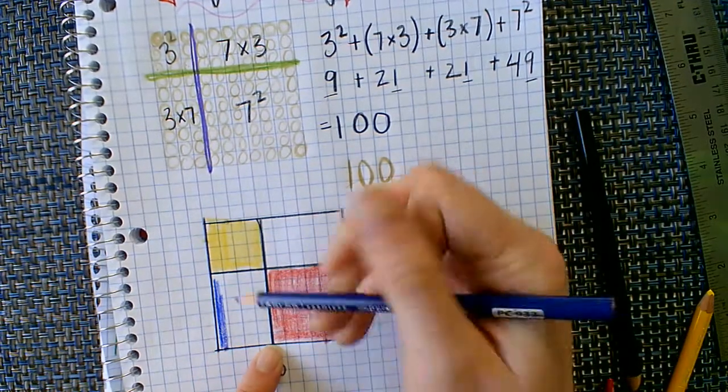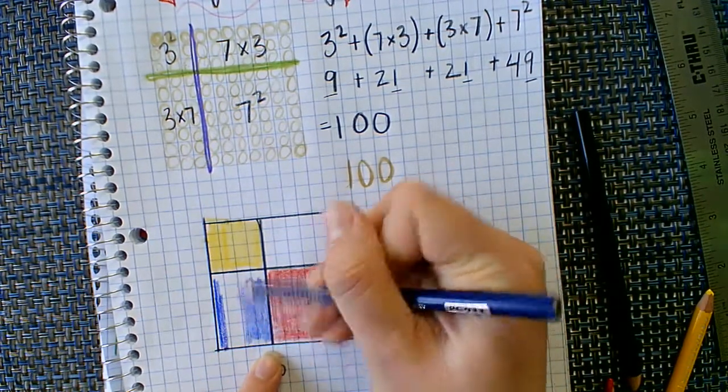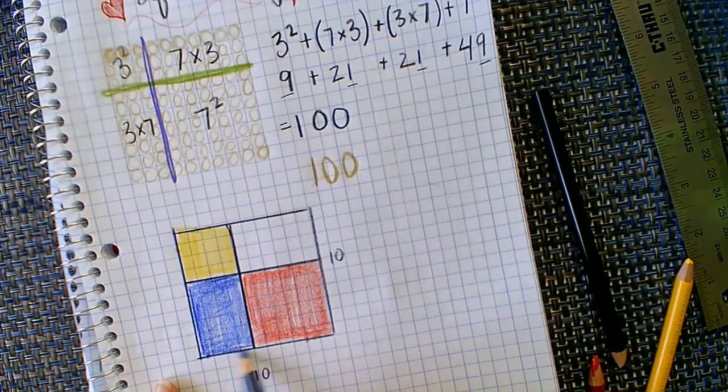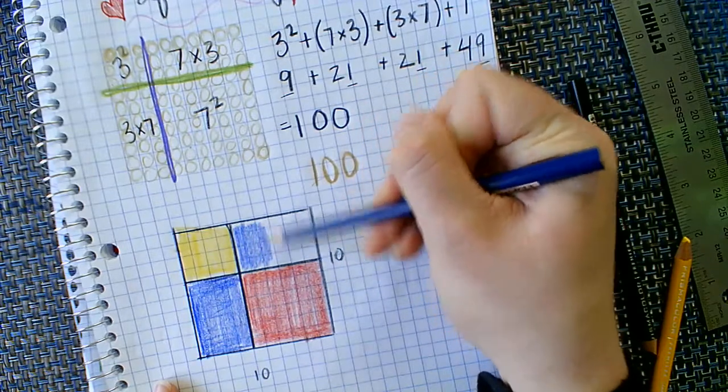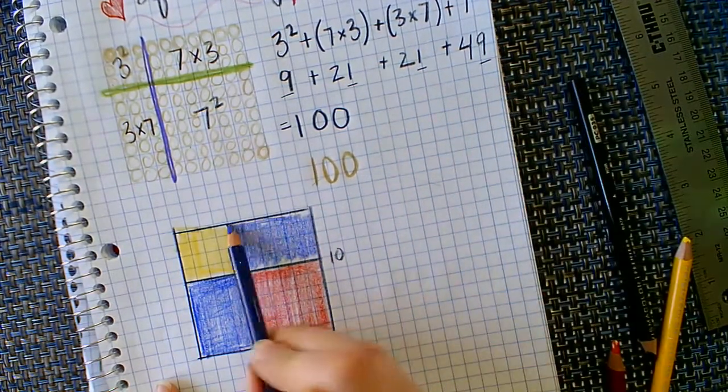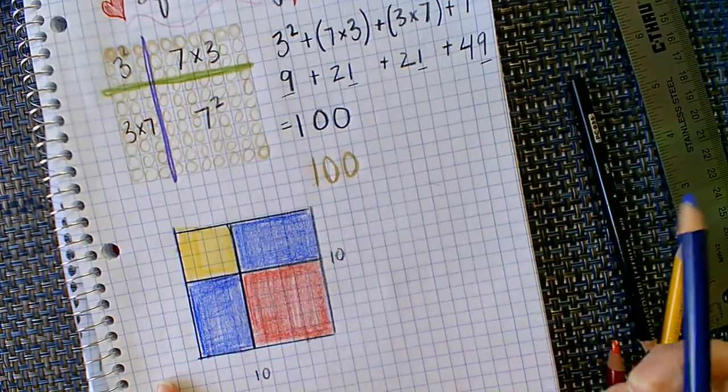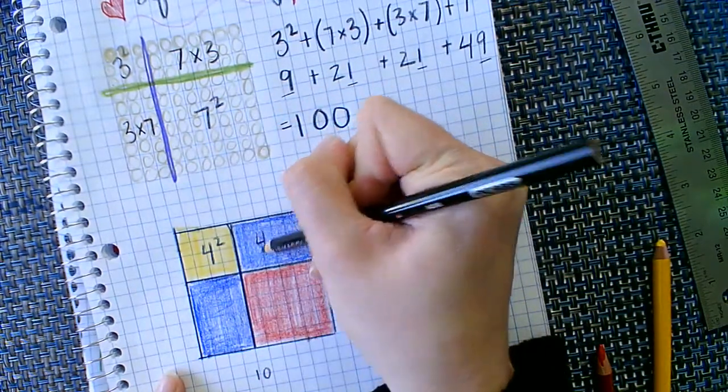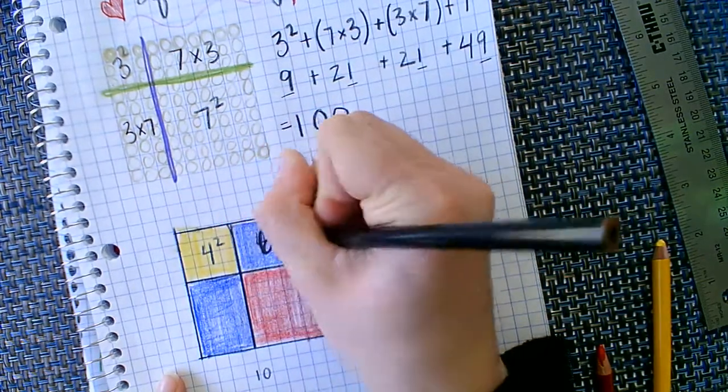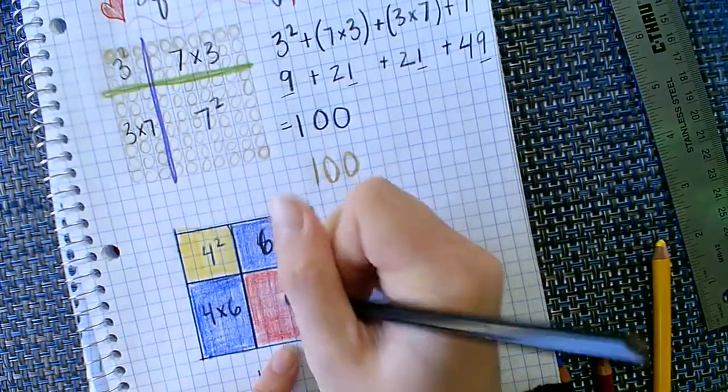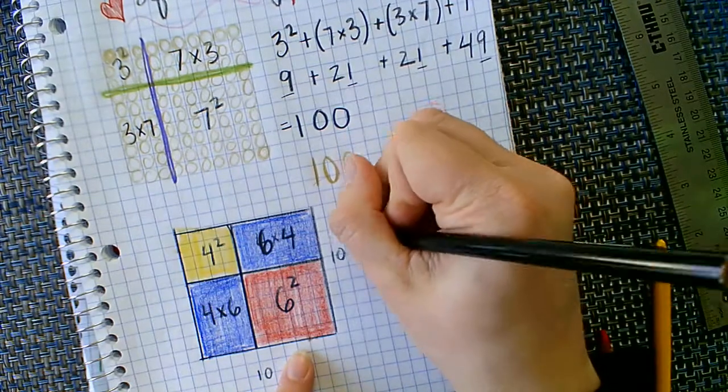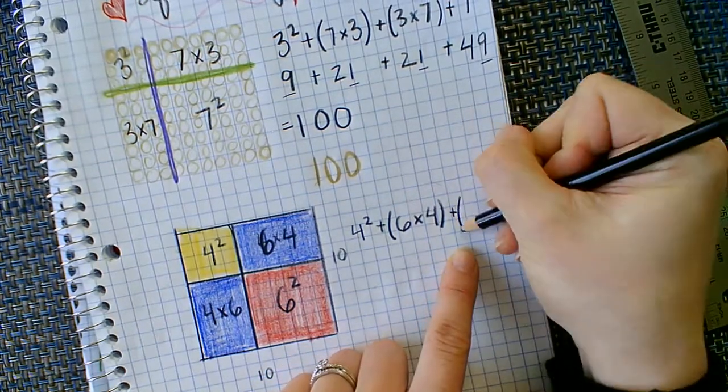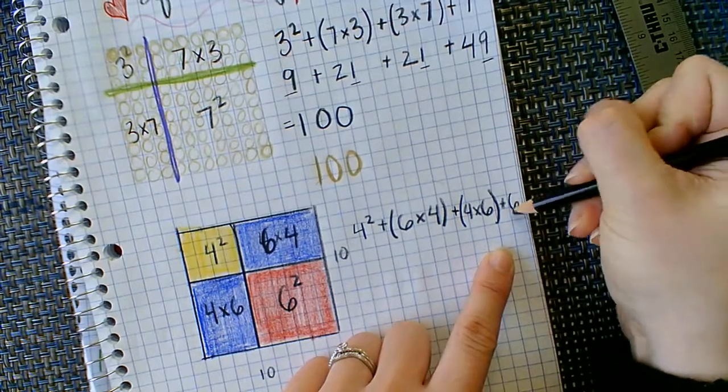And I know this is one, two, three, four, five, six. This color choices remind me of the artist Pete Mondrian. Don't know who it is, you should check it out. He did very geometric work featuring the primary colors. And then I would label it. So this is four squared. This is four times, well, six times four, technically. And then this is four times six, and then six squared. And then we'd write out four squared plus six times four plus four times six plus six squared and solve from there.